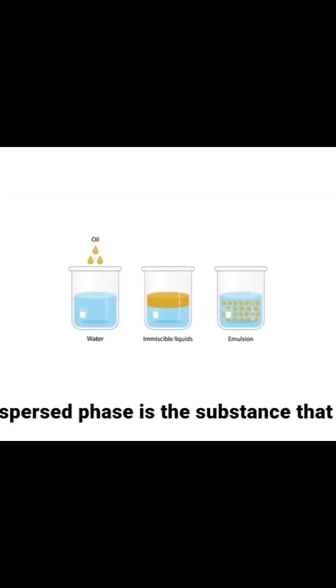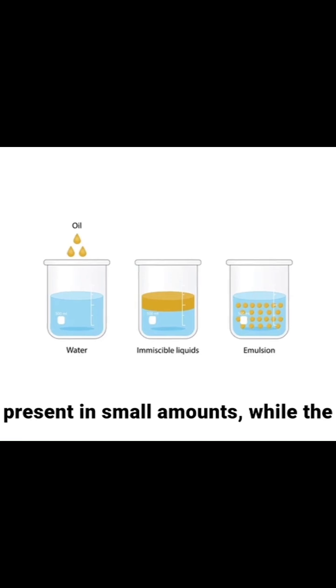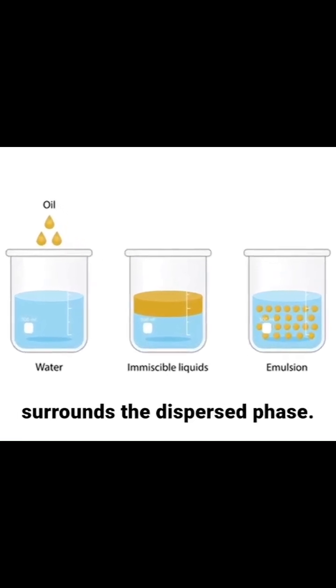The dispersed phase is the substance that is present in small amounts, while the dispersion medium is the substance that surrounds the dispersed phase.